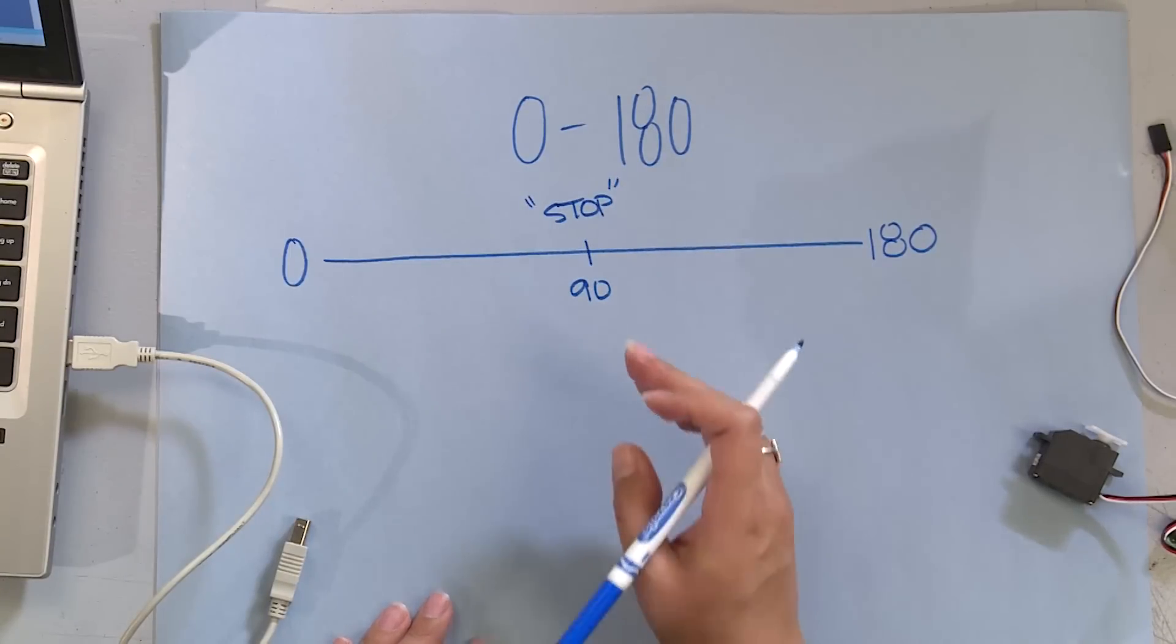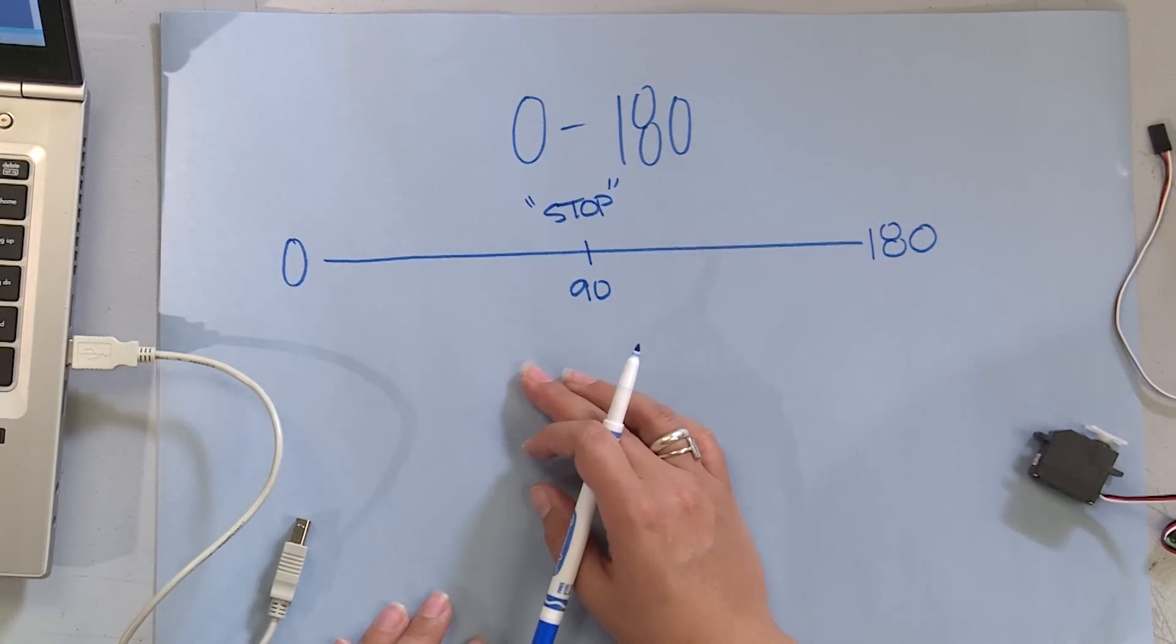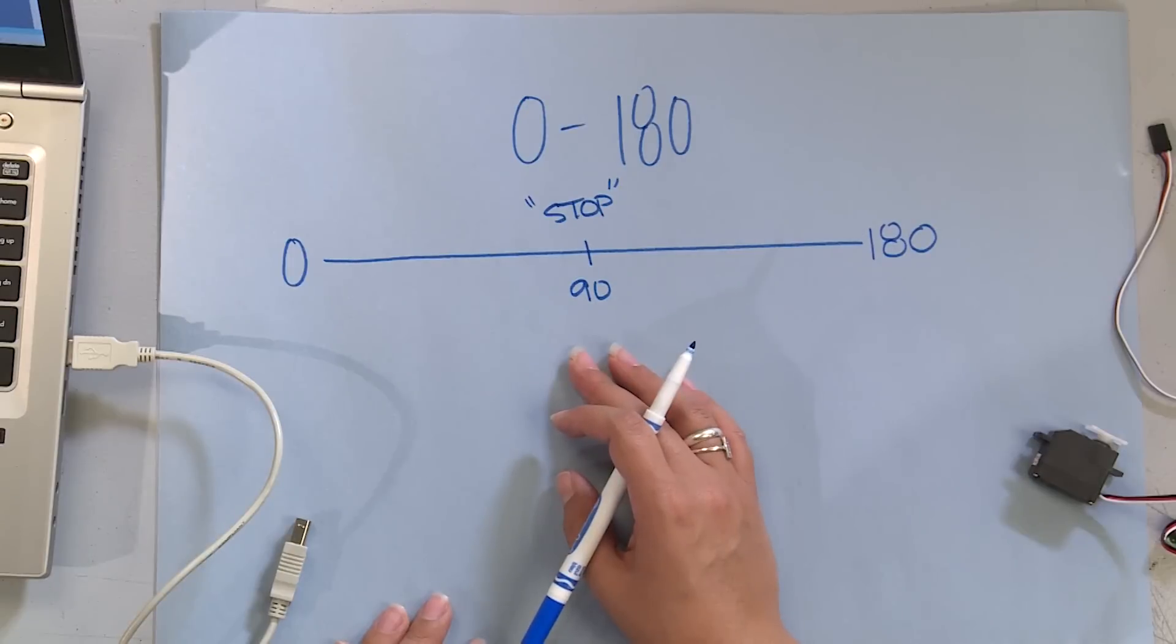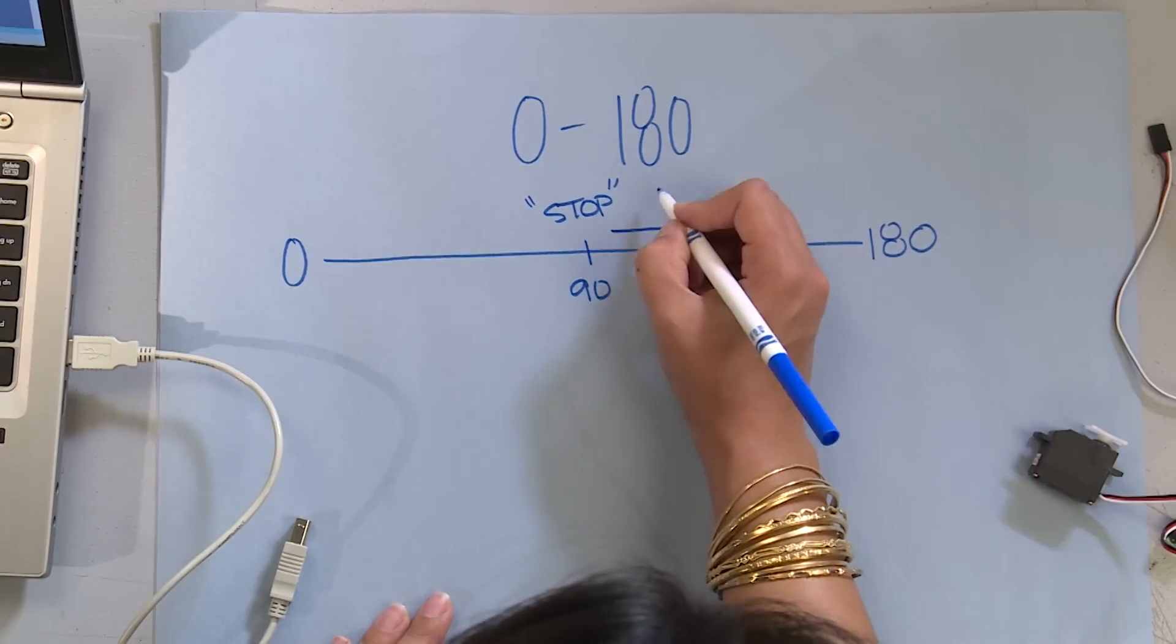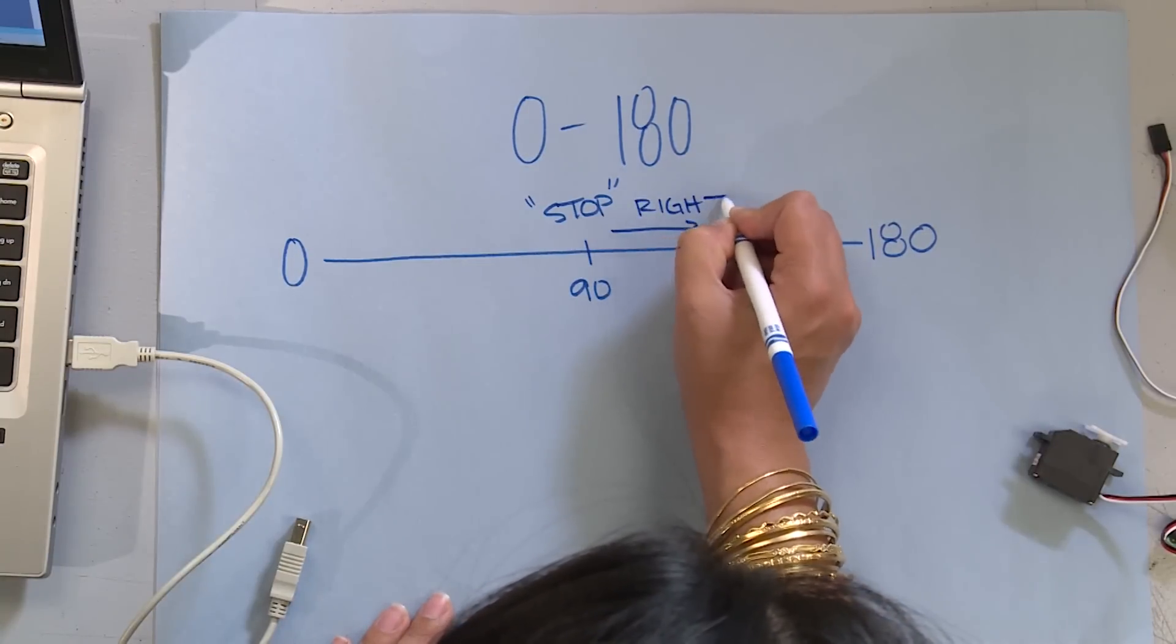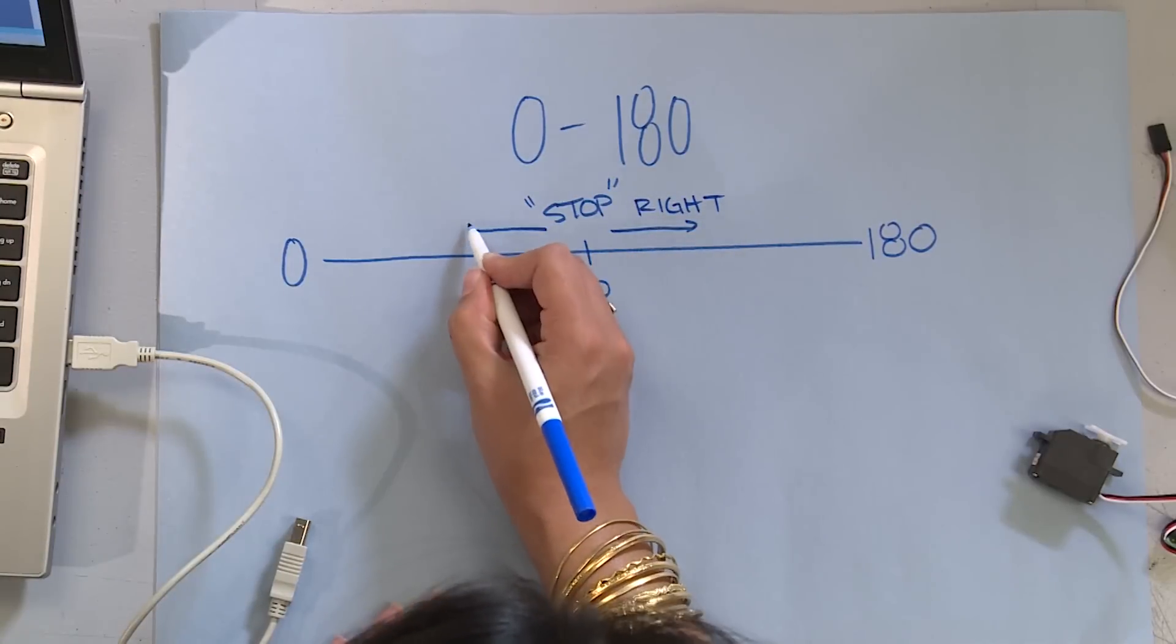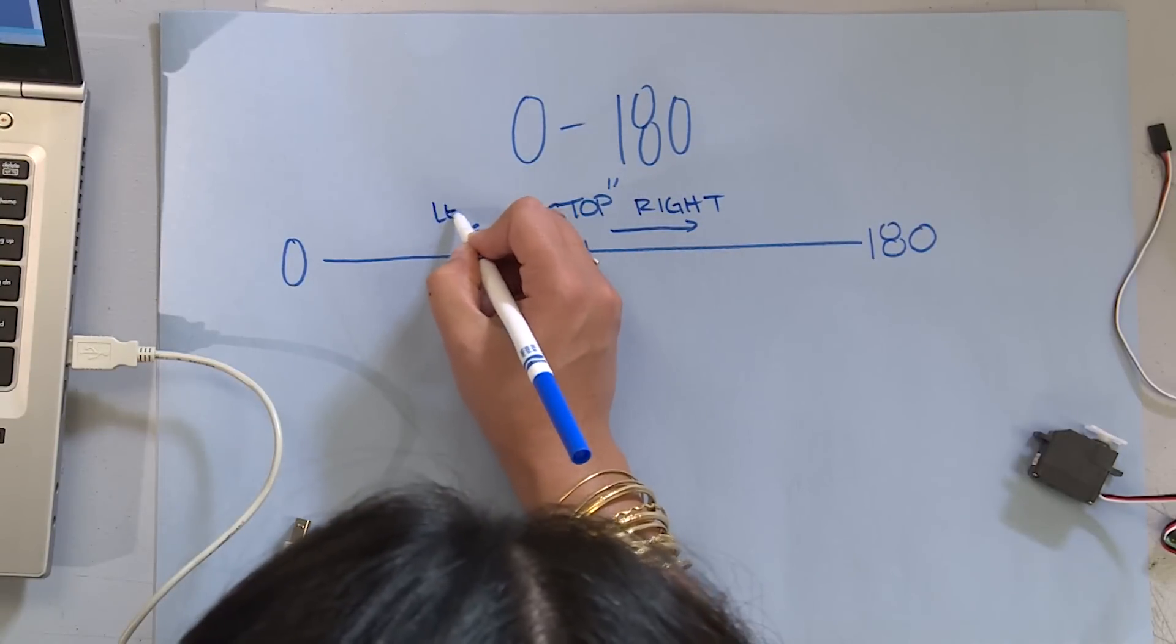Sometimes you have to put 91, sometimes you have to put 89. It's really trial and error to make it stop. But if you choose a value to the right of 90, your servo will spin to the right. If you choose a value to the left of 90, your servo will spin to the left.